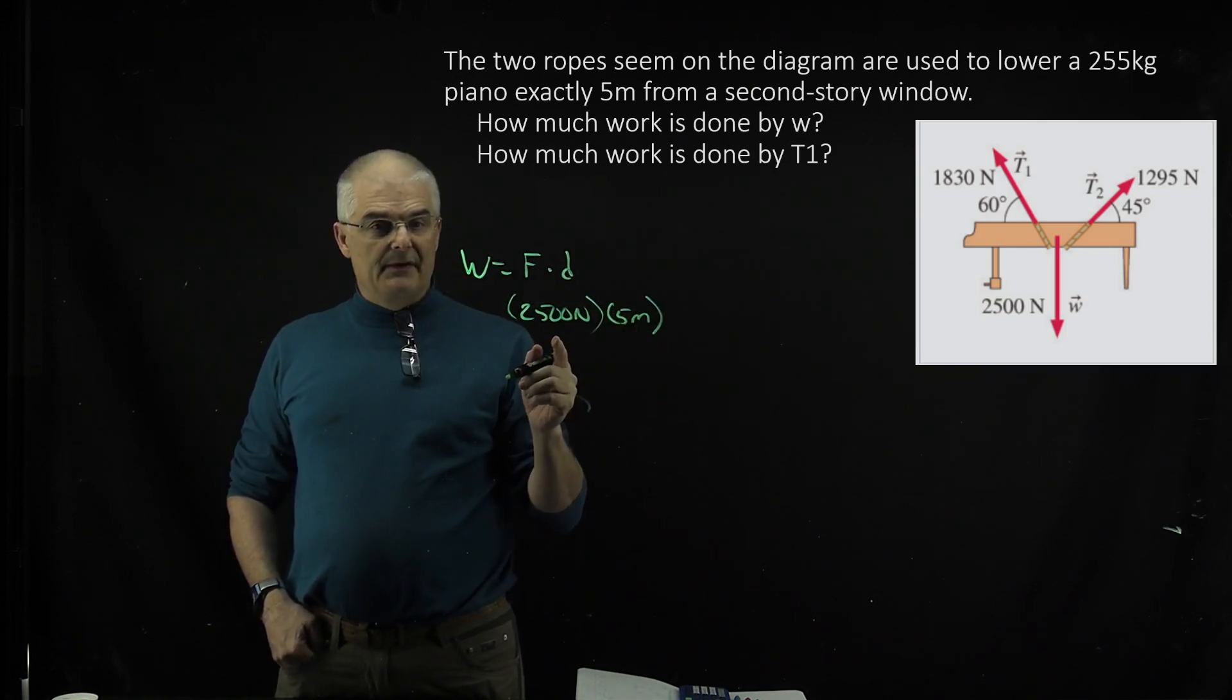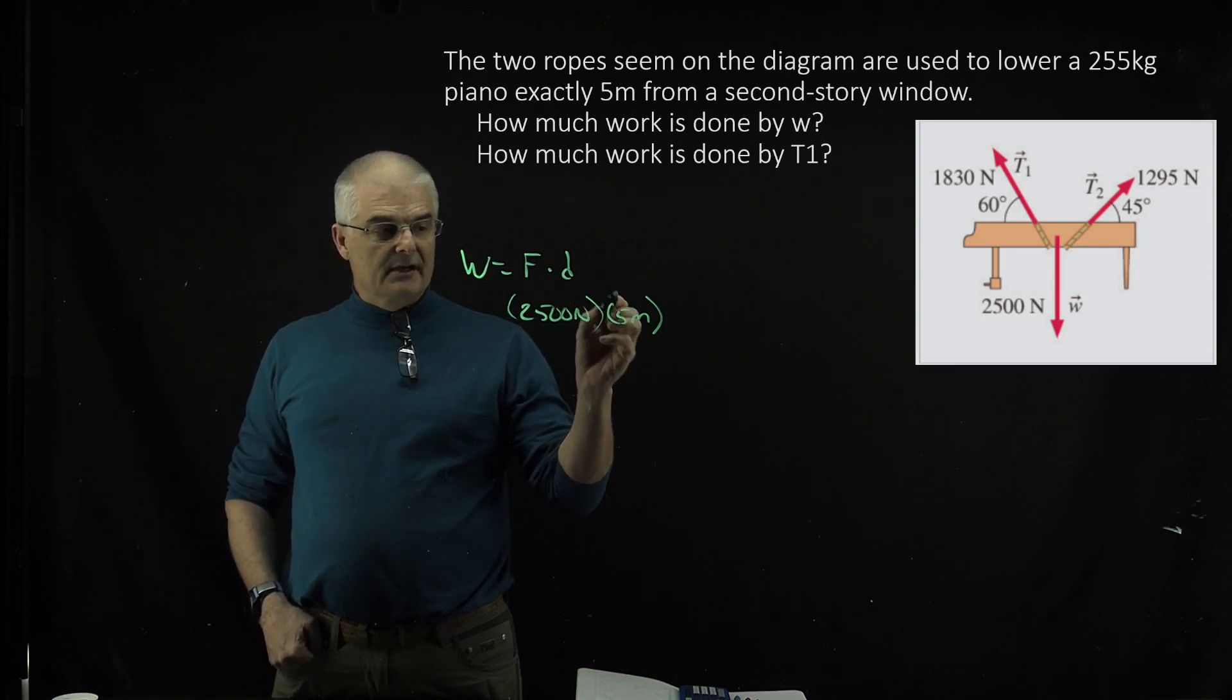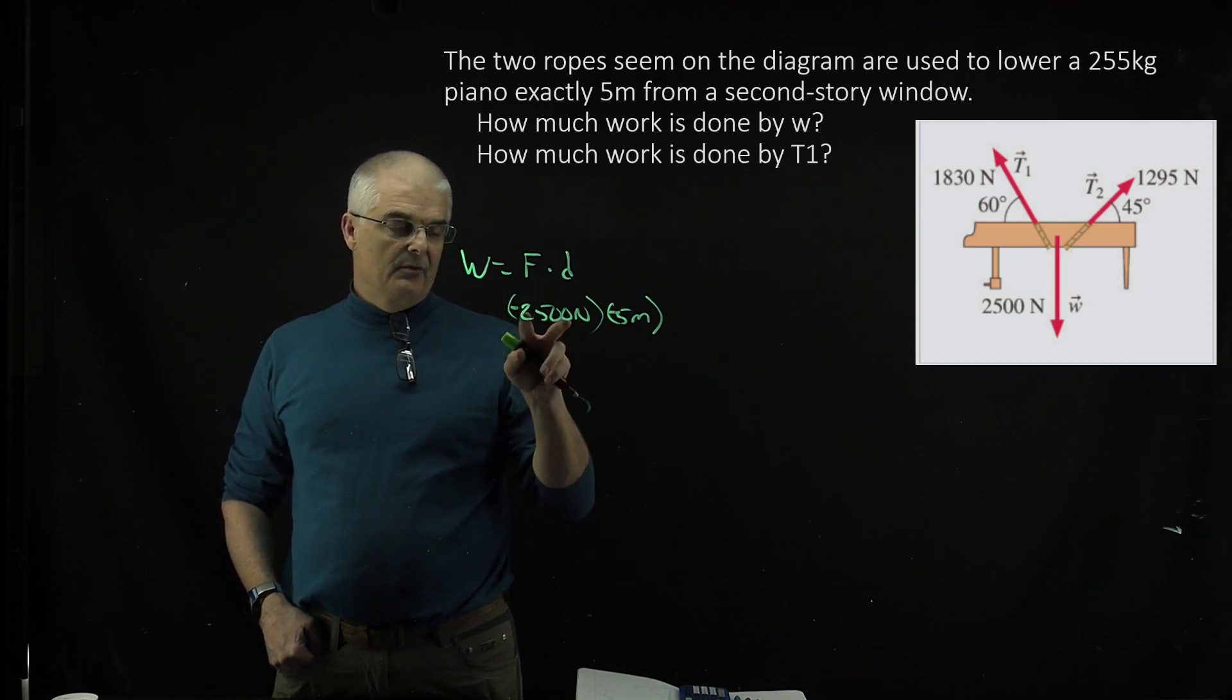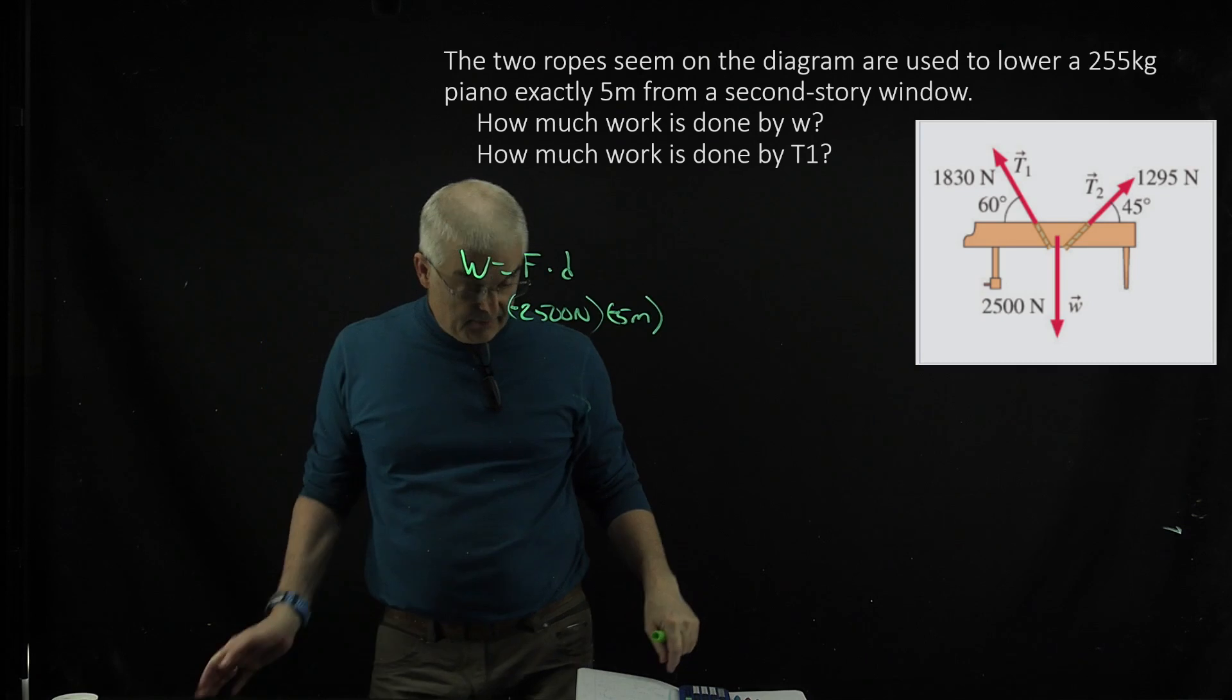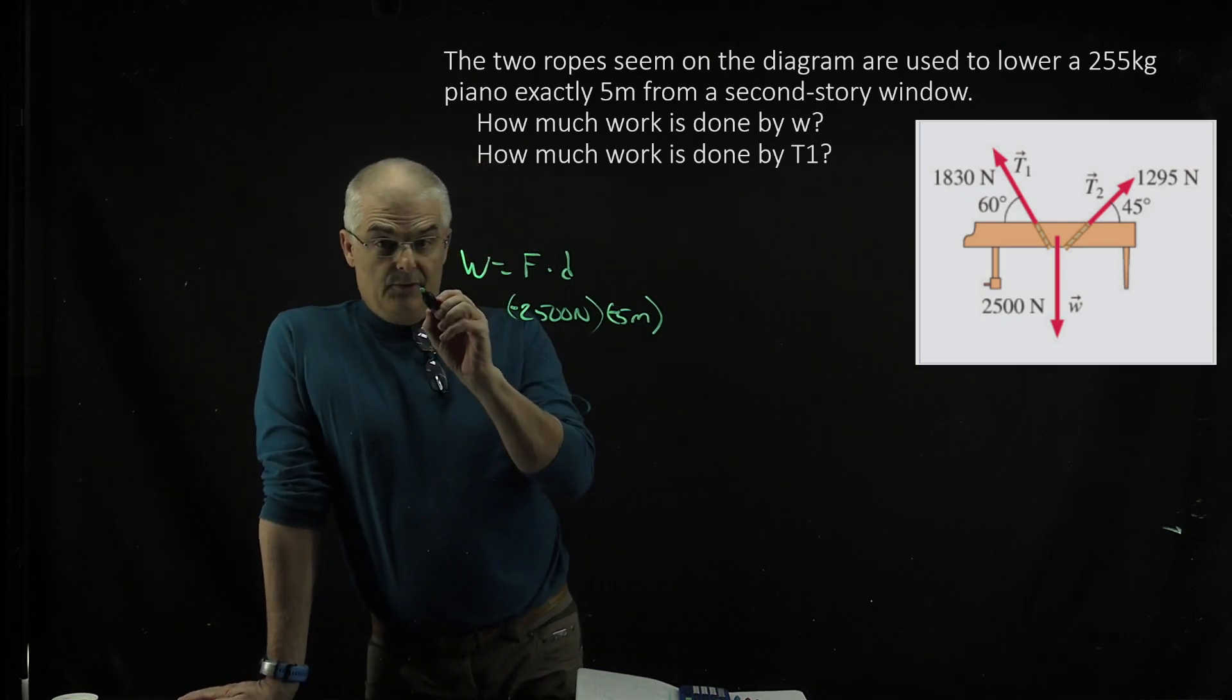But let's think about this. The distance is negative five and the weight is negative, or the weight is downward, so it's negative. So it's negative times a negative. So you will get a positive answer for number A.